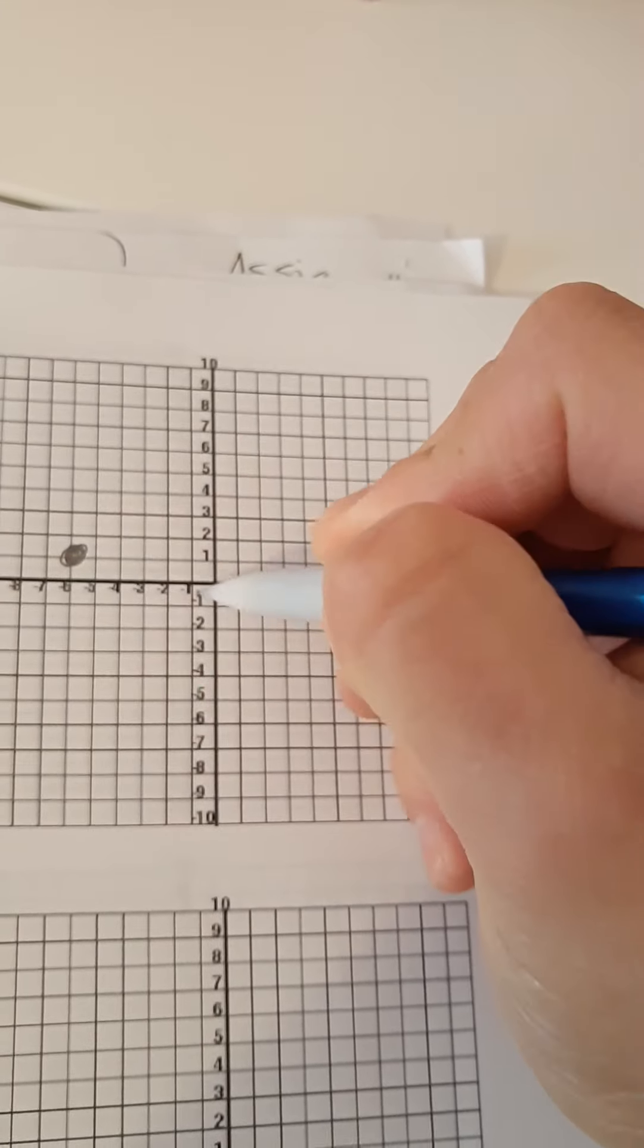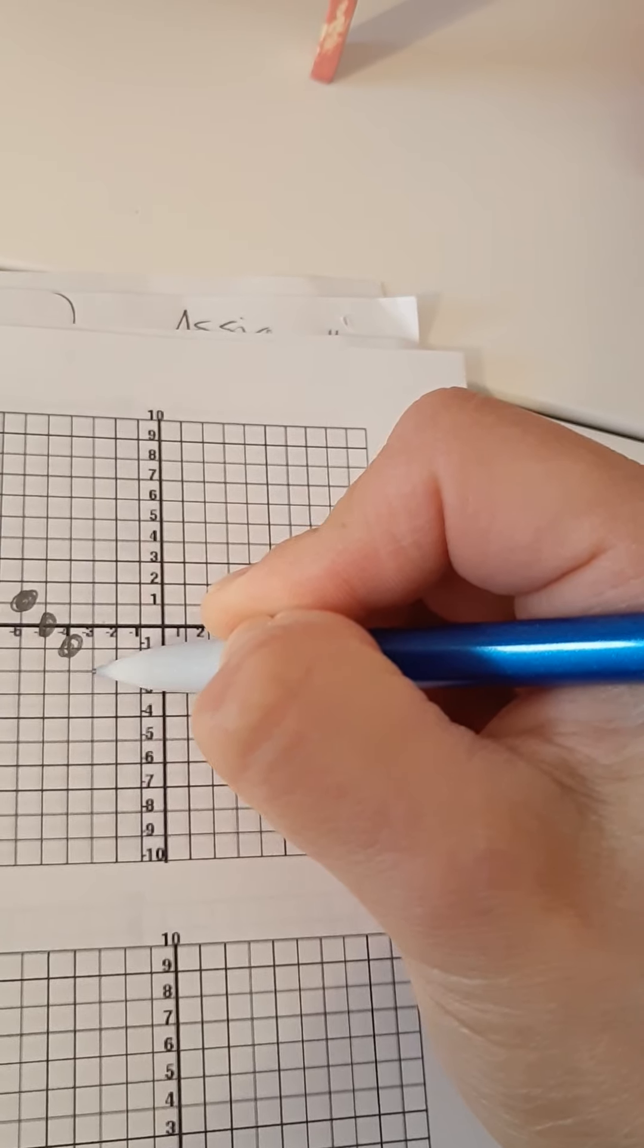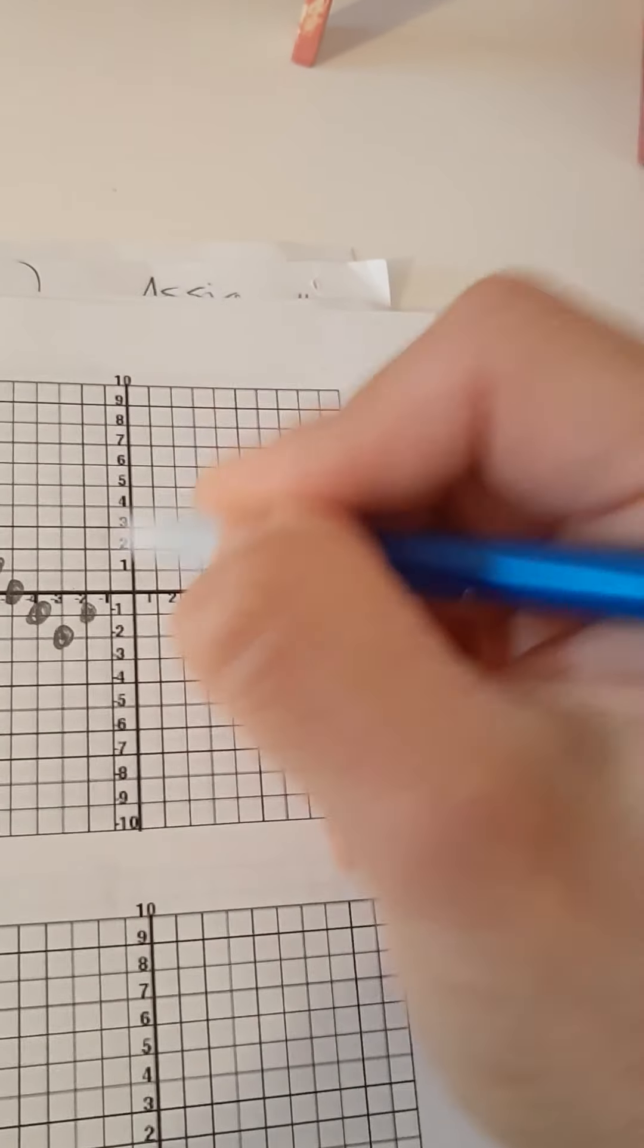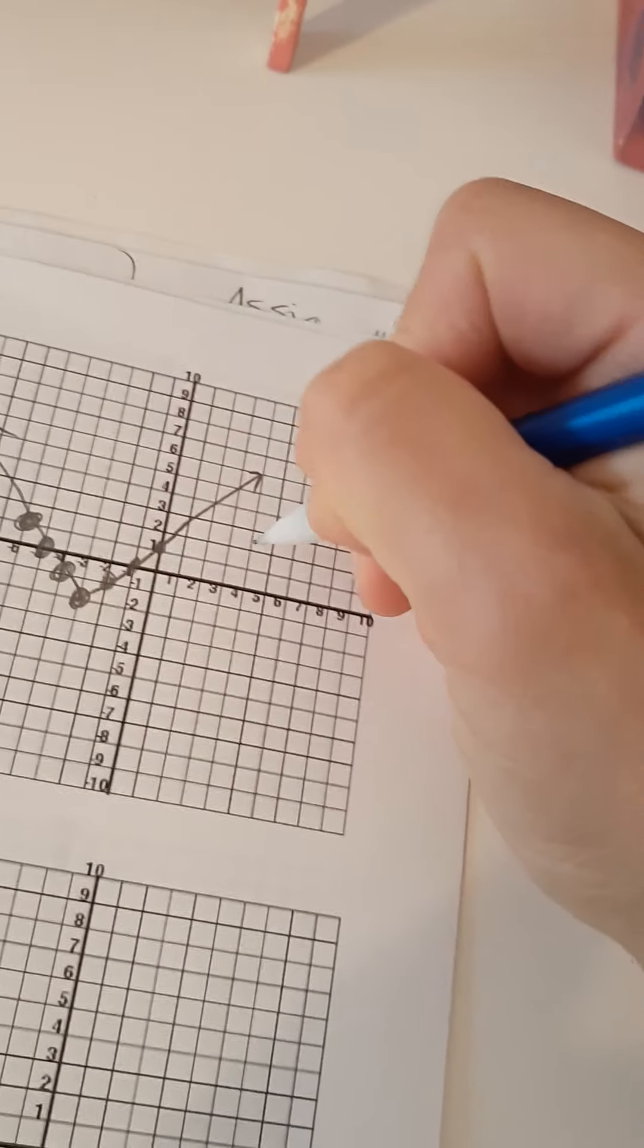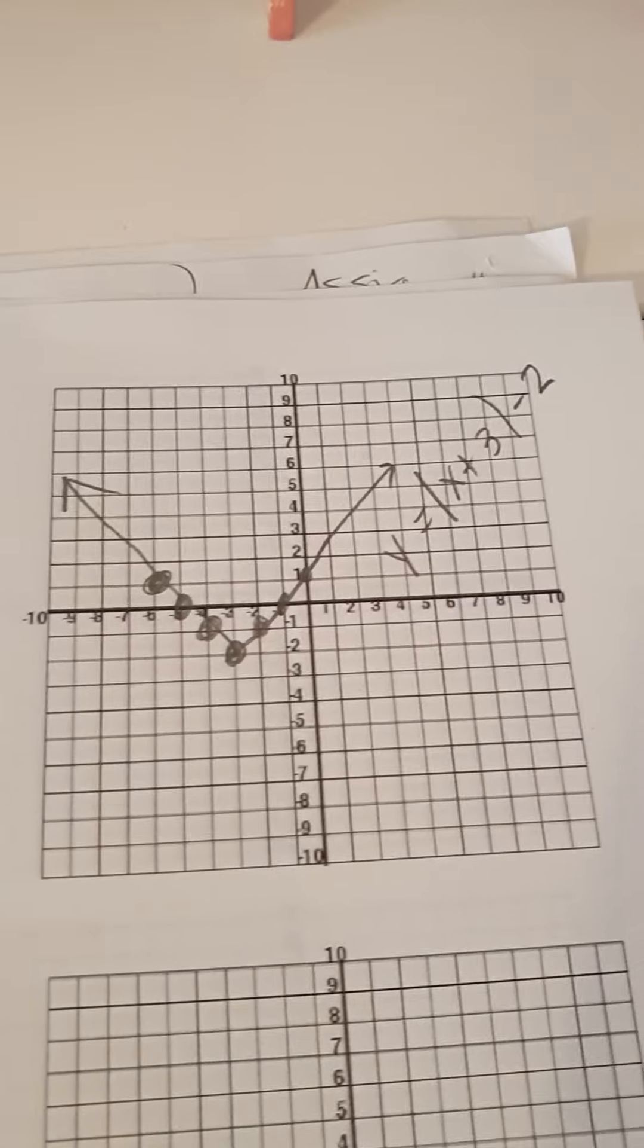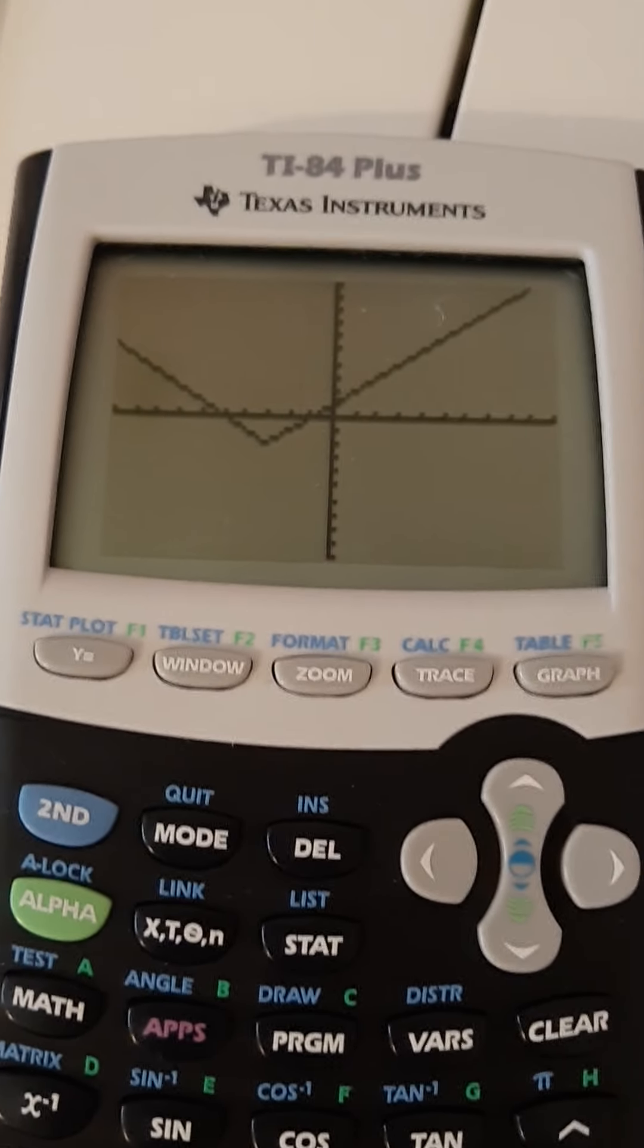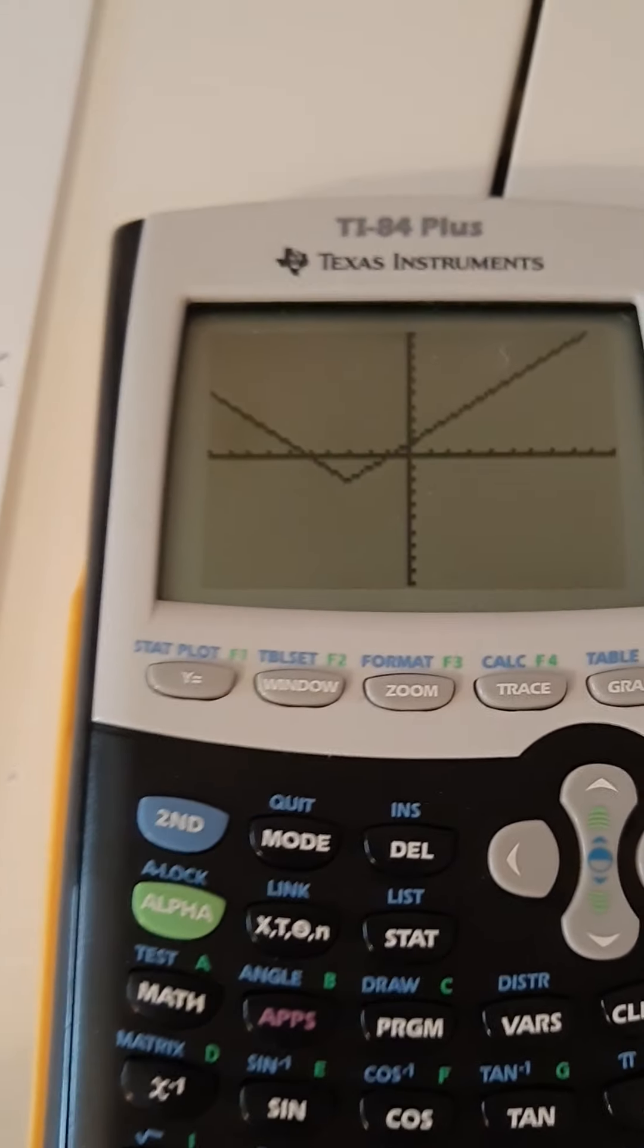So let's plot these points. Negative 6, 1, that was a really big value, huh? Negative 5, 0, negative 4, negative 1, negative 3, negative 2, negative 2, negative 1, negative 1, 0, and 0, 1. So mine, my beautiful graph looks exactly like this one. So that's the check method everyone. Make sure you hit zoom 6, and that will bring you to a nice standard window.